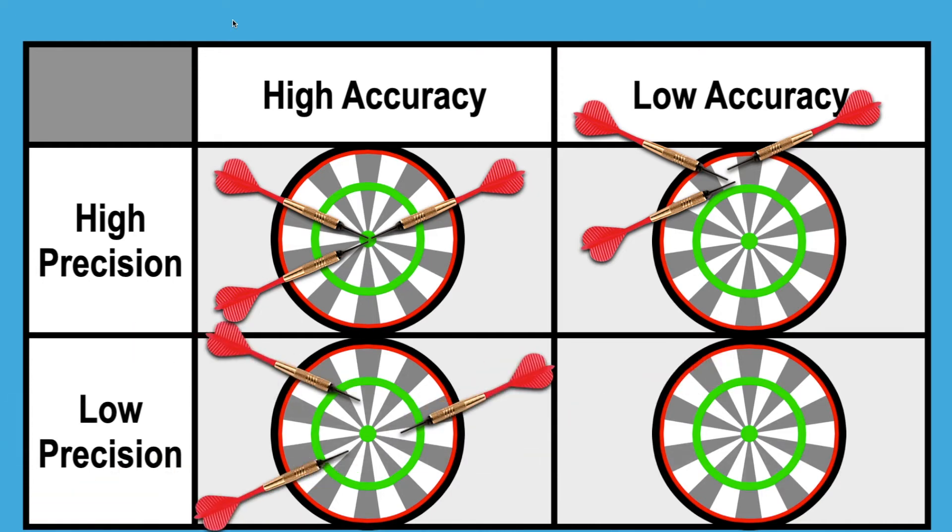Low precision but high accuracy: your shots are equidistant from what they should be, so when you end up averaging them out you end up with the right answer. And then last but not least, low precision and low accuracy, where your shots are all over the place and you're nowhere near the correct answer.